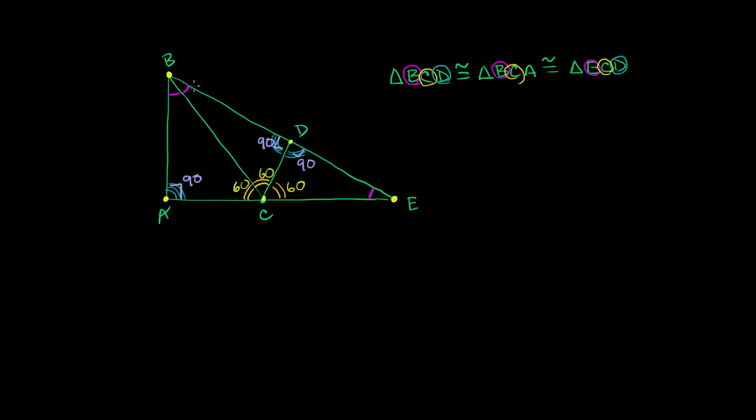And then we're left with these magenta parts of the angle. And here we can just say, well, 90 plus 60 plus something is going to add up to 180. 90 plus 60 is 150. So this has to be 30 degrees to add up to 180. And if that's 30 degrees, then this is 30 degrees. And then this thing right over here is 30 degrees.